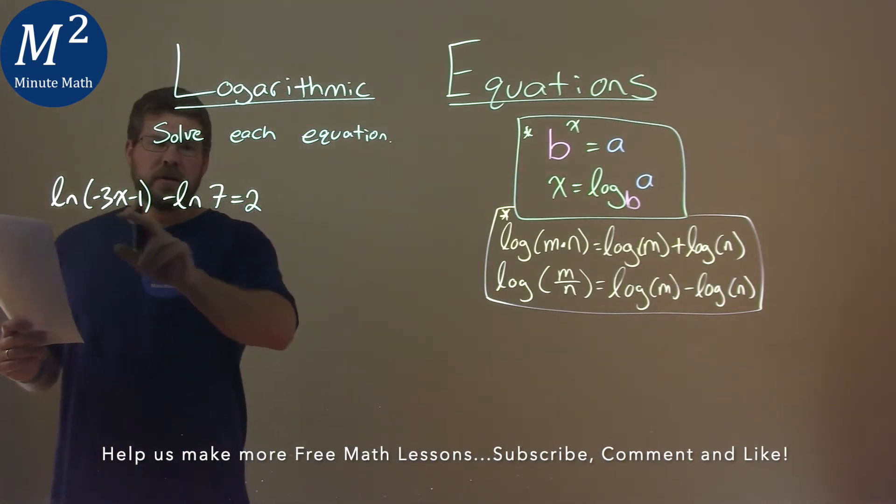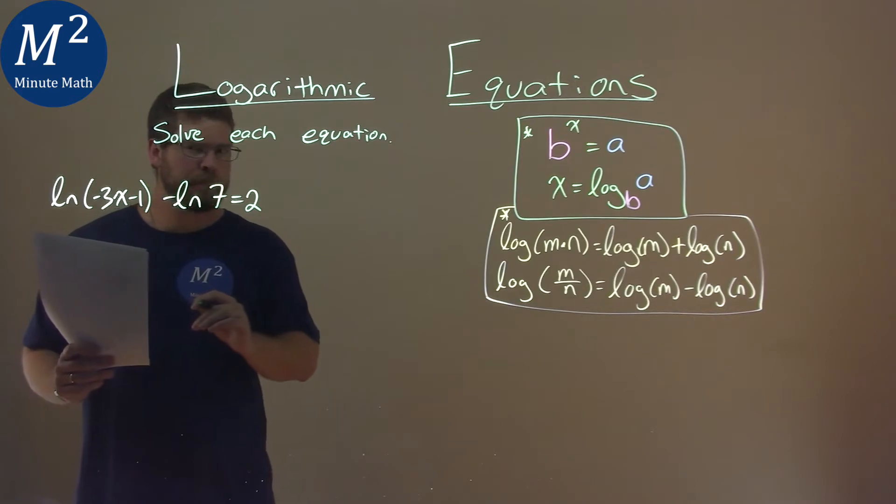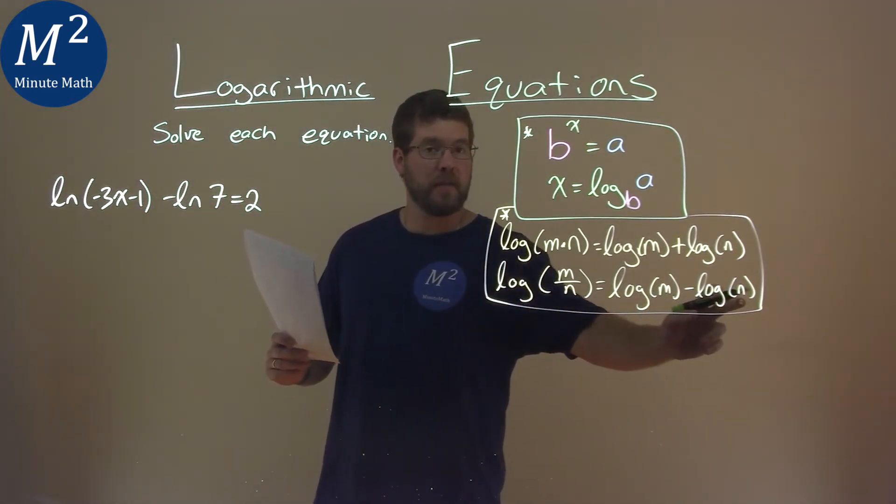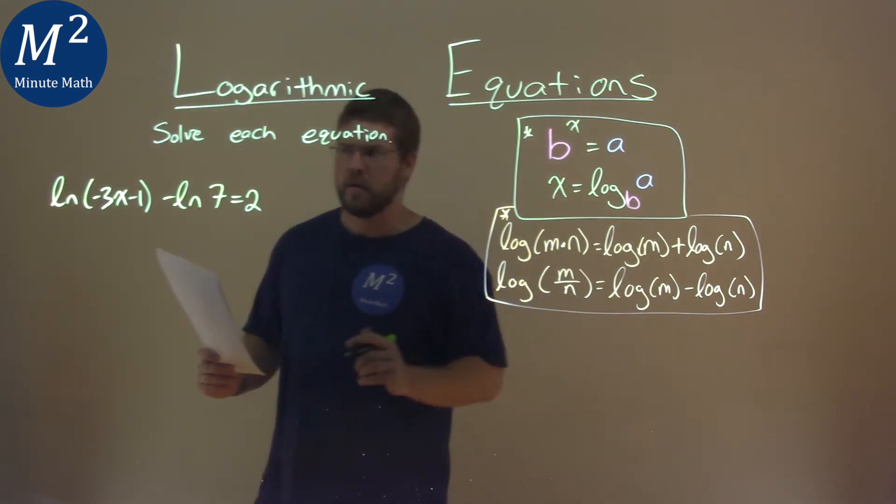Well, natural log is log base e, and we have the same ones right here. So we can use our formula: log of m minus log of n can be combined to one logarithm, and we divide the insides. So let's go do that here.